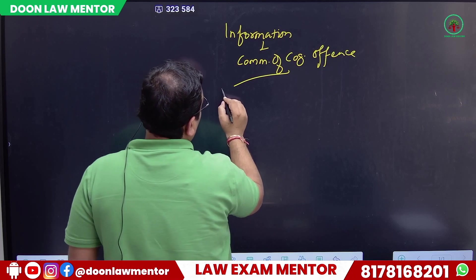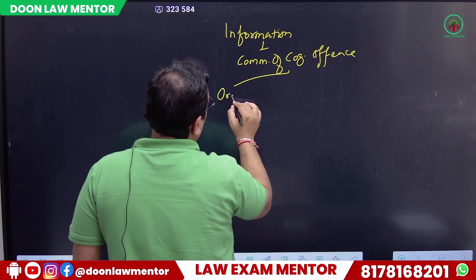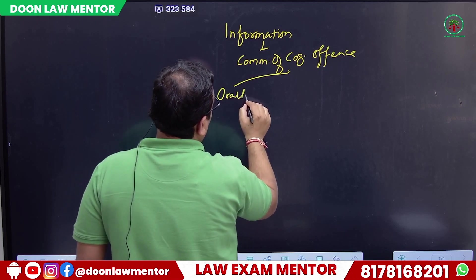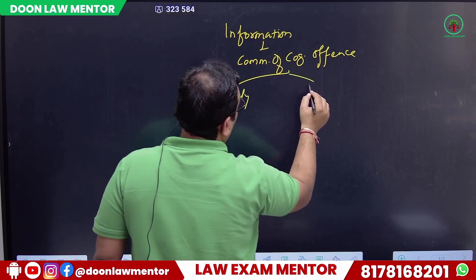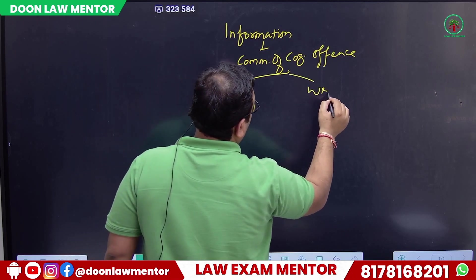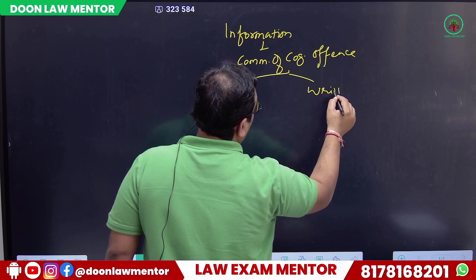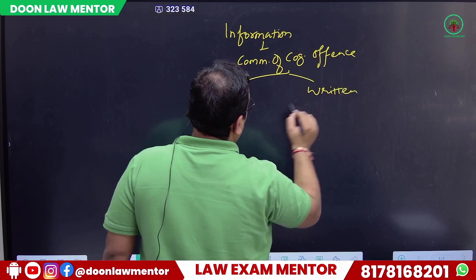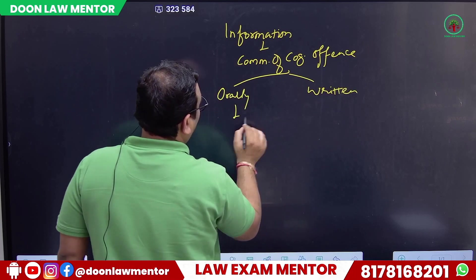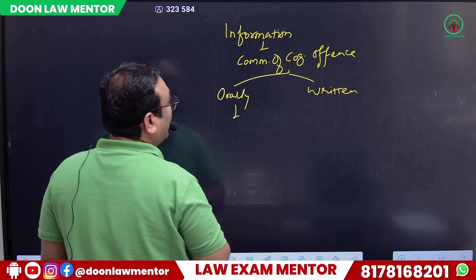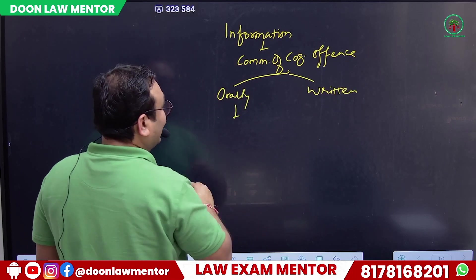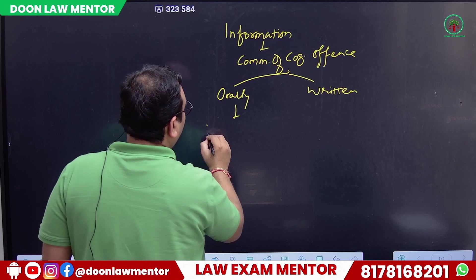Let's summarize as a flow chart: When an informant comes with information regarding the commission of a cognizable offense, information can be given orally or in written form. If oral, it will be reduced to writing.